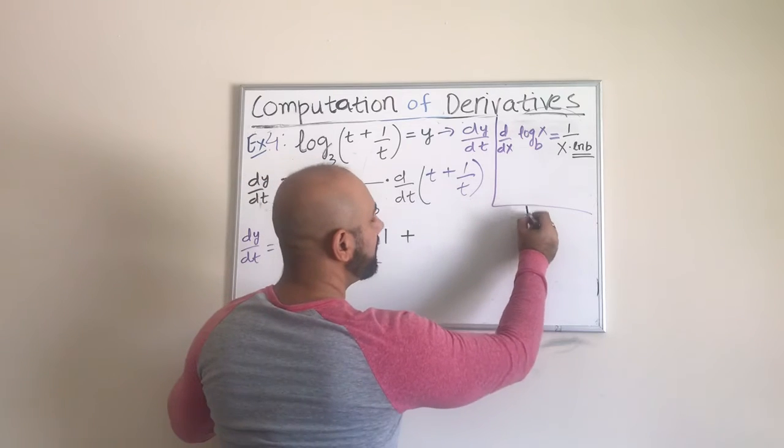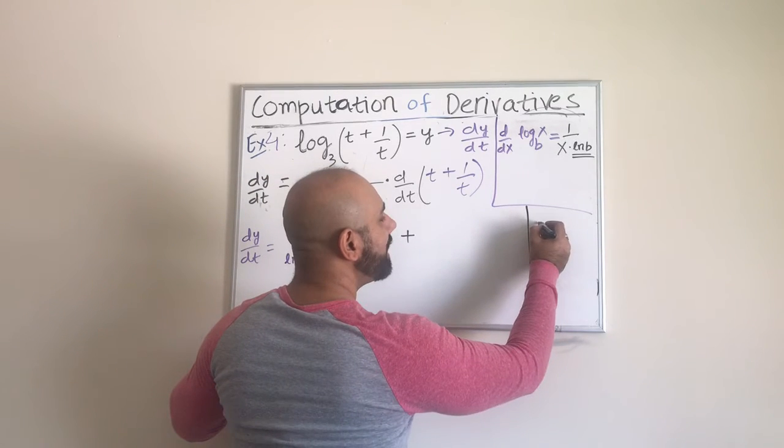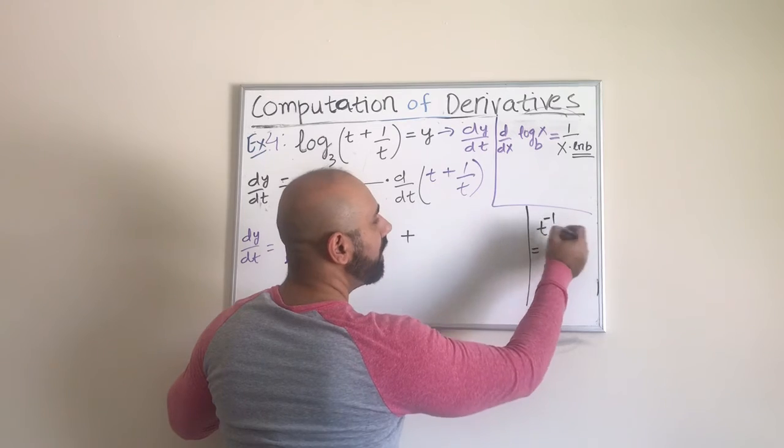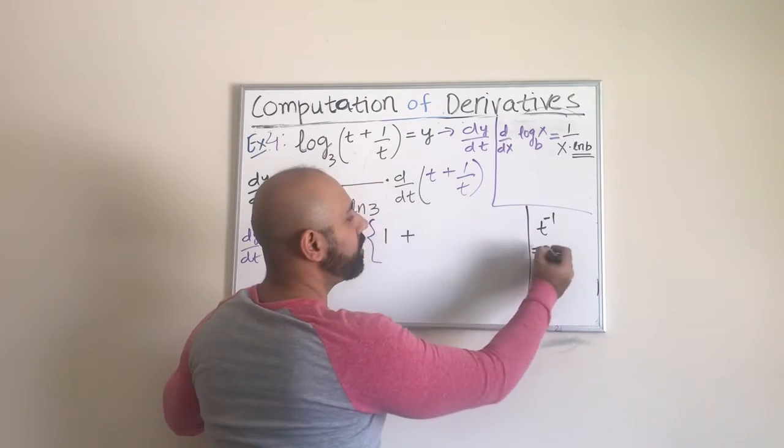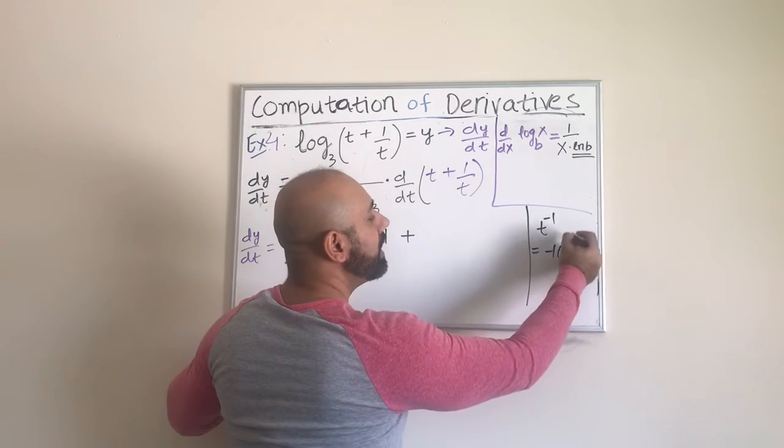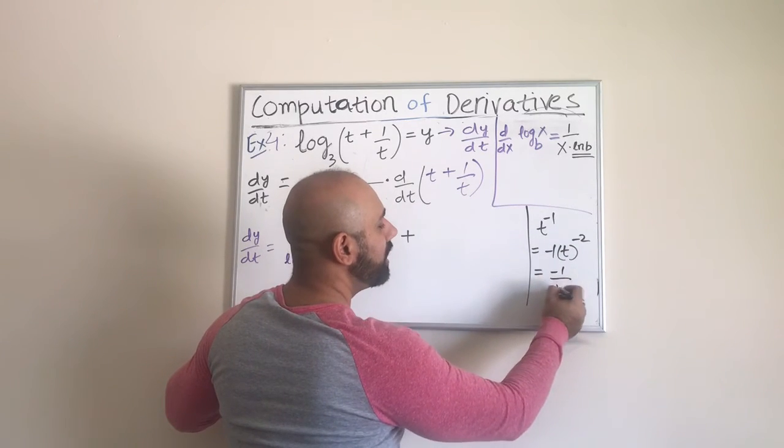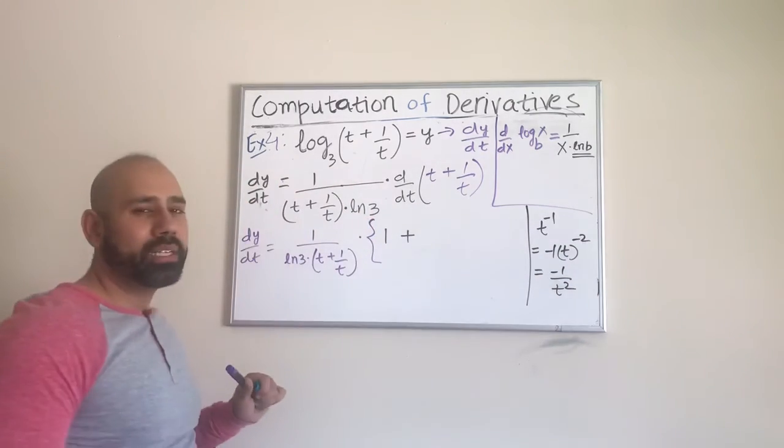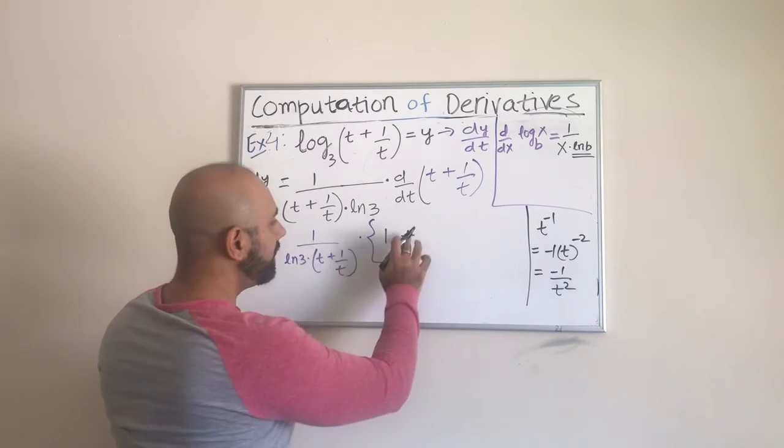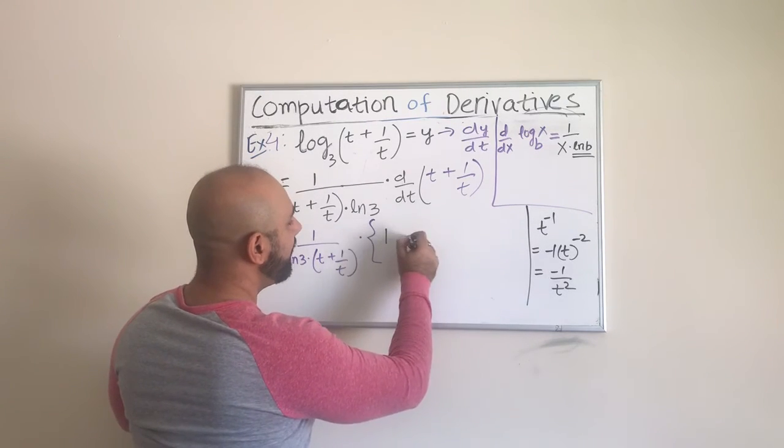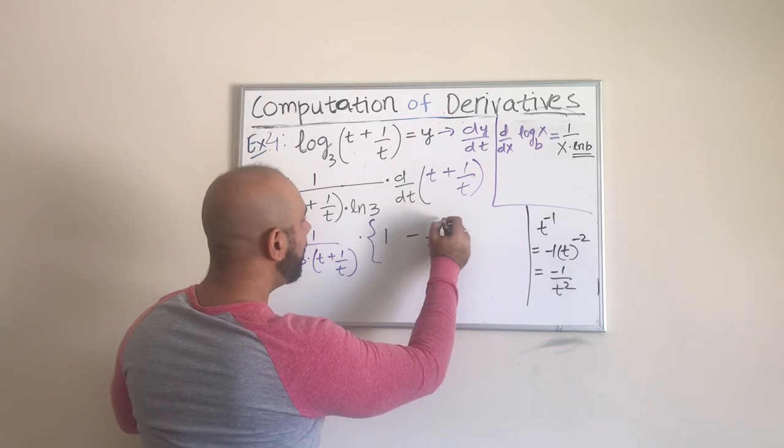So let us do that on the side. So 1 over t is same as t to the power negative 1 and using the formula for x to the power n, the power rule, it's going to be negative 1 t to the power n minus 1. So that would be negative 2. So it is negative 1 over t square, because we don't like the negative exponents. So the derivative here is just negative 1 over t square.